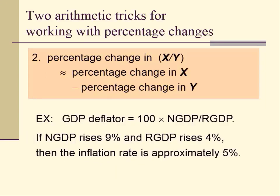The second trick: percent change in x over y is approximately equal to percent change in x minus percent change in y. Using this with the GDP deflator formula: if nominal GDP rises 9% and real GDP rises 4%, then the percent change in the GDP deflator is approximately 9% minus 4%, which equals 5%.